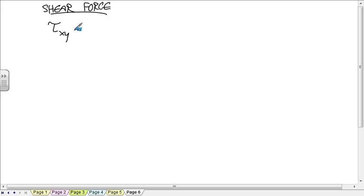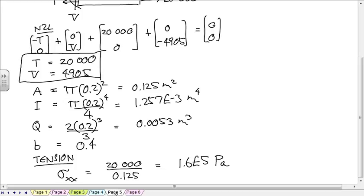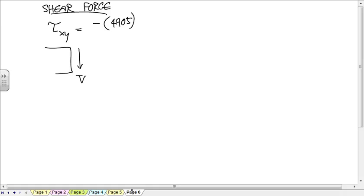So we have a positive shear force, so that's coming down the positive x face. And so on the positive x face, that's a negative y shear. So we have a negative value times the magnitude of the shear force, so 4905, times q, 0.0053.